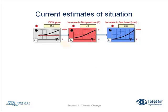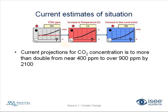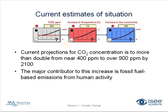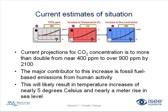Let's take a quick stock of the current estimates of the situation. Current estimates are that CO2 concentrations are going to more than double from around 400 parts per million now to over 900 by 2100. This is caused by fossil fuel burning emissions as well as other emissions, but the major contributor of the rise is human activity associated with fossil fuel burning. This will likely result in temperature increases of nearly five degrees Celsius and nearly a meter rise in sea level — a very concerning situation.